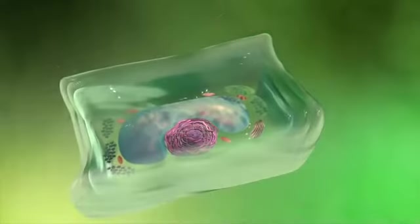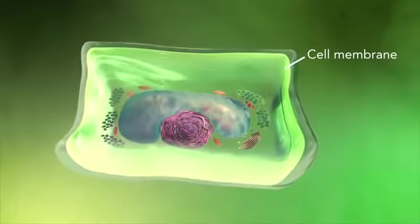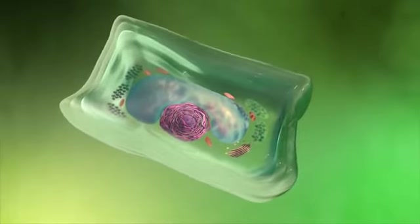Plant cells also have a cell wall outside of their cell membranes that shape, support, and protect the plant cell. Animal cells never have a cell wall.